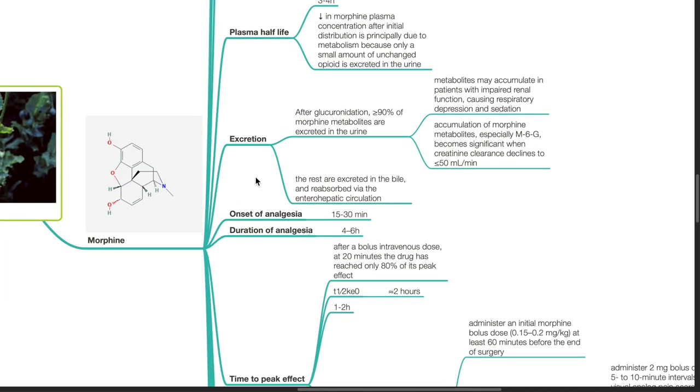Morphine excretion. After glucuronidation, more than 90% of morphine metabolites are excreted in the urine. Metabolites may accumulate in patients with impaired renal function causing respiratory depression and sedation. Accumulation of morphine metabolites, particularly M6G, becomes significant when creatinine clearance declines to less than 50 mls per minute. The rest of the metabolites are excreted in the bowel and reabsorbed via the enterohepatic circulation.